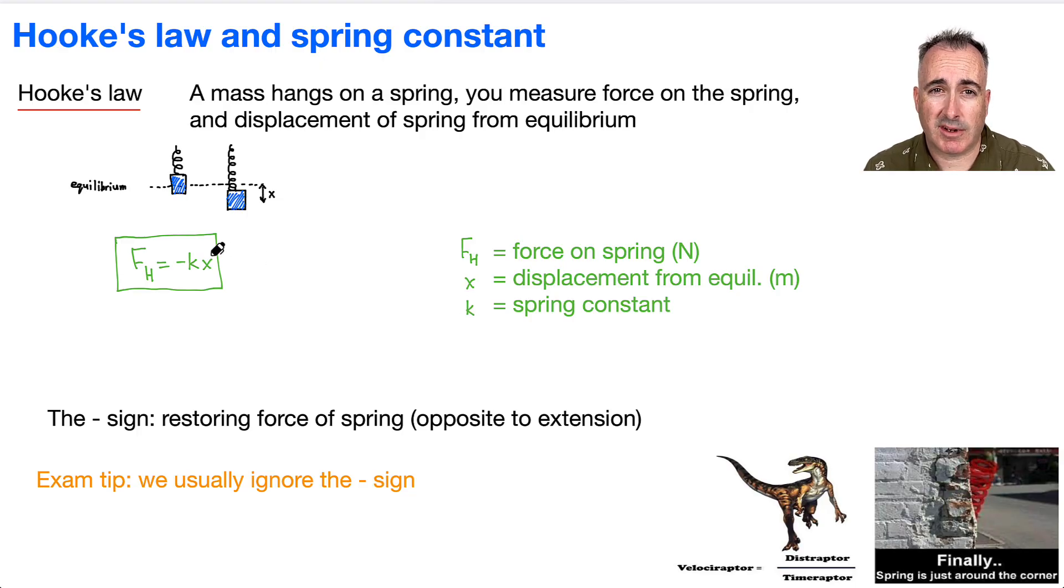Now, what are the units of it? You could work them out by just saying, let's solve for K. So get K by itself. Wouldn't it be just F_H over X? So the Hooke's law force over X. Well, F is in newtons, and X is in meters. So it'll be newtons per meter. So that's why we figure out that this one here has units of newtons per meter.